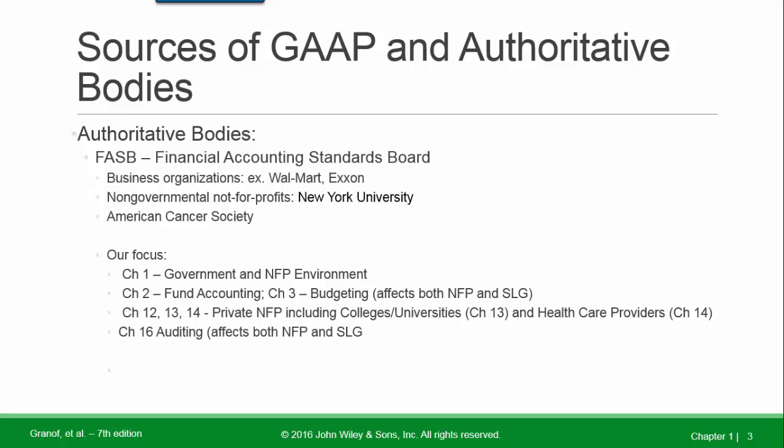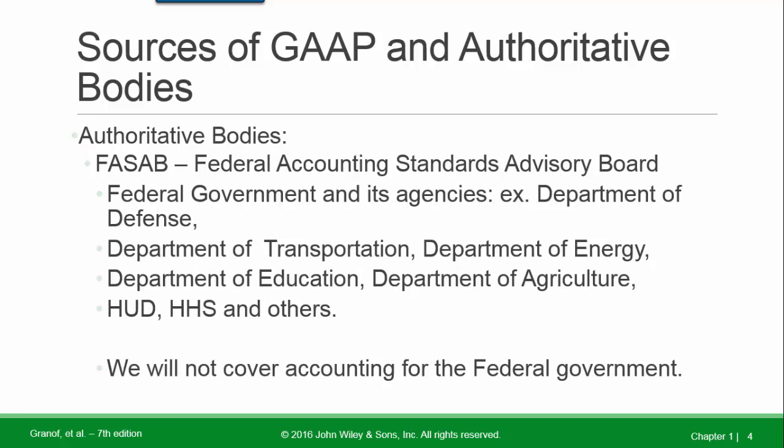Chapter 2 covers Fund Accounting. Chapter 3 covers Budgeting. Chapters 12 through 14 address Private Not-for-Profits, including colleges, universities, and healthcare providers. Chapter 16 covers Auditing. The FASAB is the Federal Accounting Standards Advisory Board, and we do not cover accounting for the federal government.